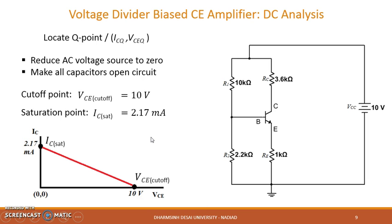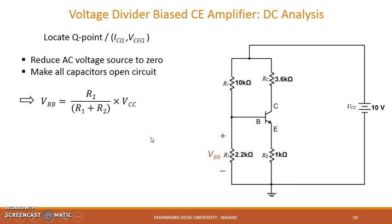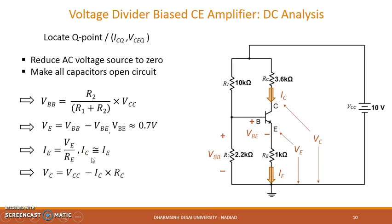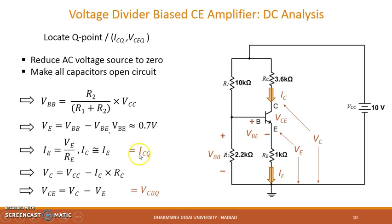To locate the Q point on the load line, first find VBB — the voltage across R2 — using the voltage divider equation. Then subtract VBE (approximately 0.7 V) from VBB to get VE. Using VE and RE, find IE. Since IC ≈ IE, we get ICQ. Next, find the collector voltage VC using VC = VCC − IC·RC. The difference VC − VE gives VCE, which is VCEQ. The values ICQ and VCEQ together define the Q point.